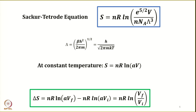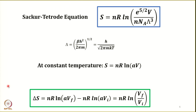We now have an expression to calculate the change in entropy when a gas expands under isothermal conditions, derived using only statistical thermodynamics concepts. Under constant temperature conditions, S = nR ln(A·V), and for any change where a gas expands from V_i to V_f, ΔS = nR ln(V_f / V_i).